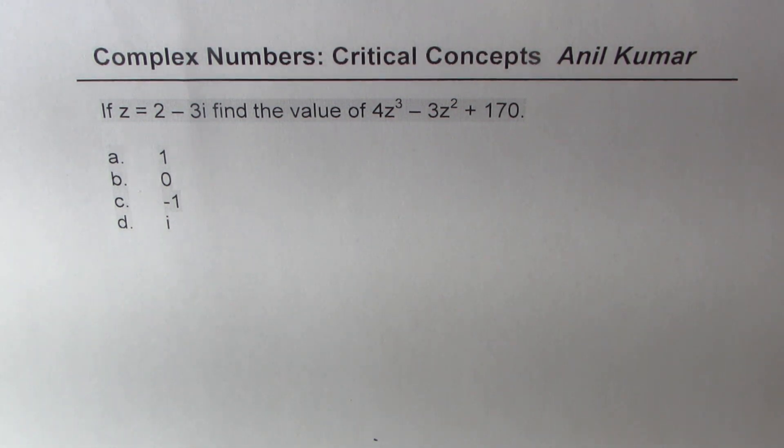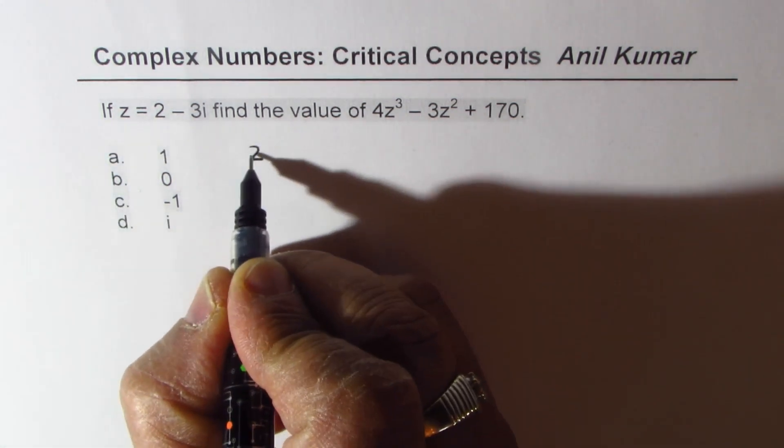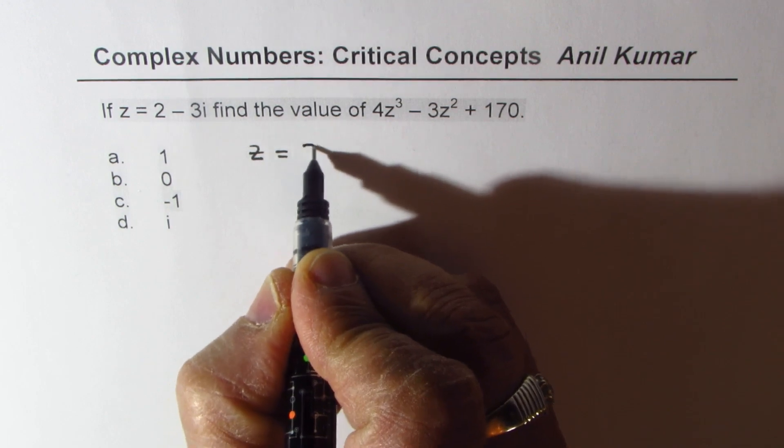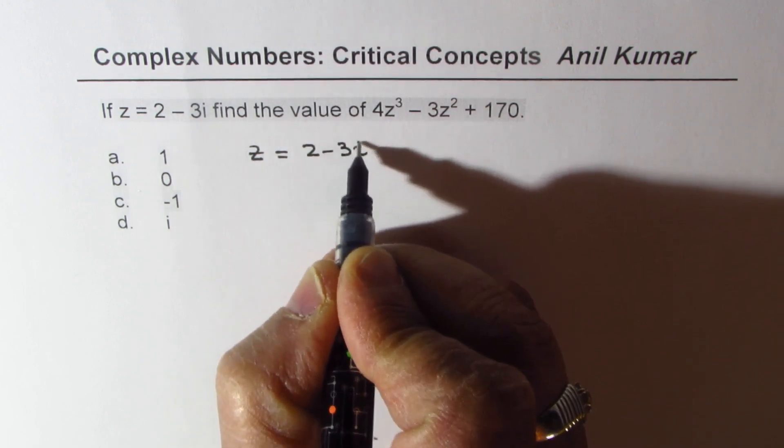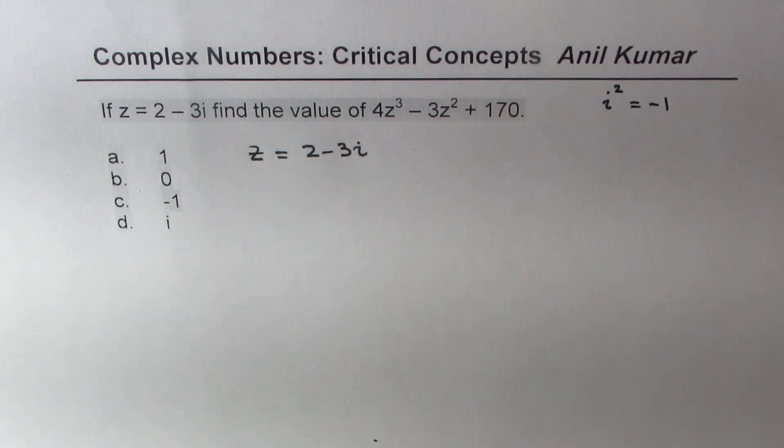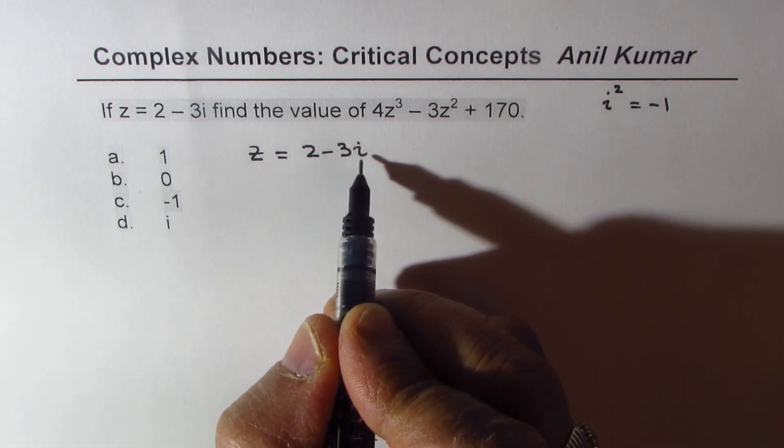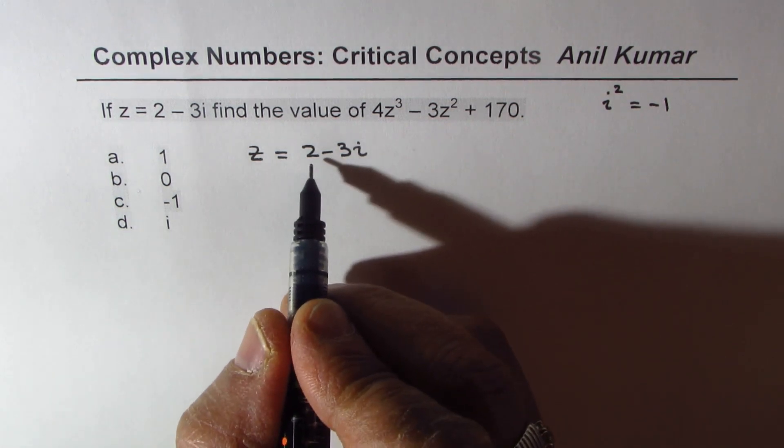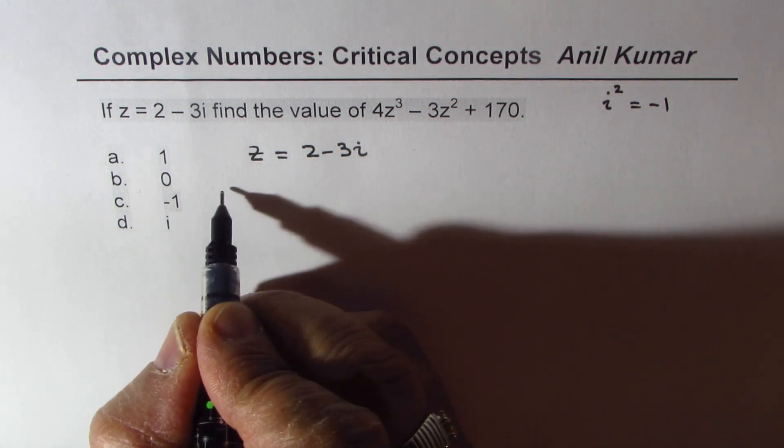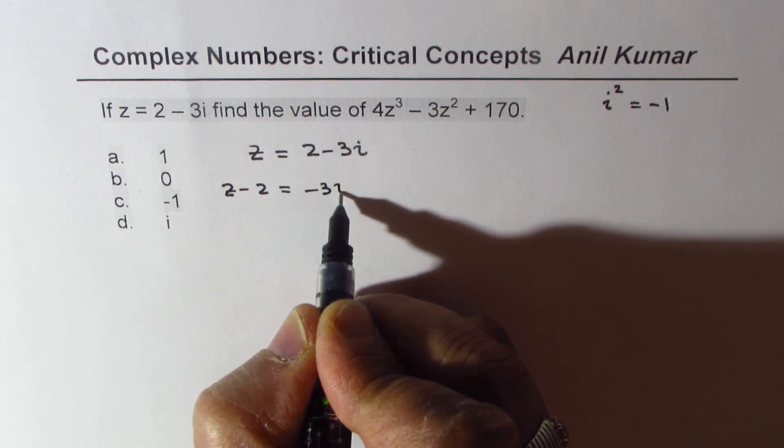First, let's work out with z itself. We are given z, the complex number, as 2 minus 3i. As you know, i² is minus 1. So the real part is 2, imaginary part is minus 3i. If I take 2 to the left side, I get z minus 2 equals minus 3i.